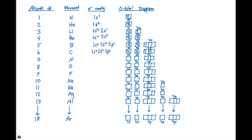For nitrogen, which has seven electrons, we do 1s2, 2s2, 2p3. We fill in the 1s and 2s orbitals just like before, and then we need three electrons in the p orbitals, which are all going to go spin up. That again follows Hund's rule.